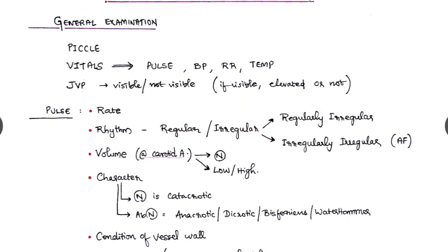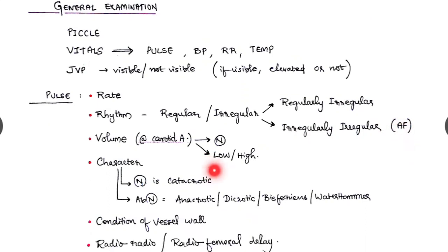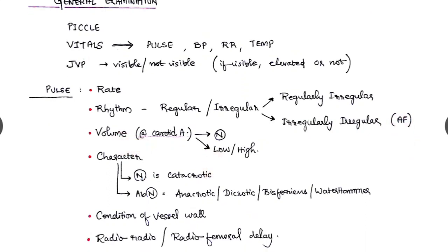Whether it is regular or irregular. If it is irregular, whether it is regularly irregular or irregularly irregular, like in AF. The volume we have to tell, and by just palpating the carotid artery, that is normal or low or high.